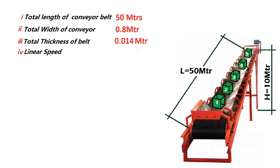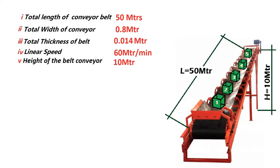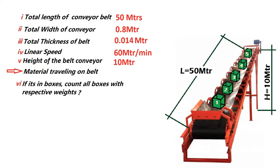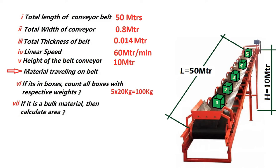We have a linear speed of the belt of 60 meters per minute. The height of the belt conveyor is 10 meters. The material traveling on the belt — if I zoom in, I have 20 kg for each box, so the total unit will be 100 kg on the belt. If it is a bulk material, you calculate the area and volume for the further process.